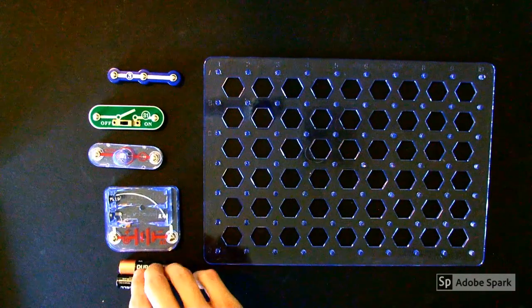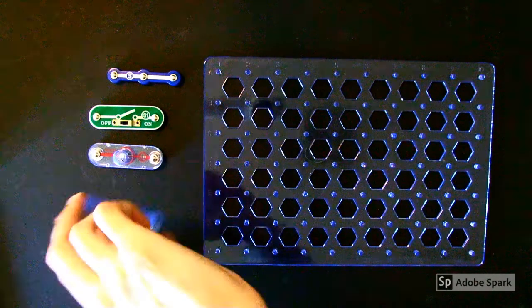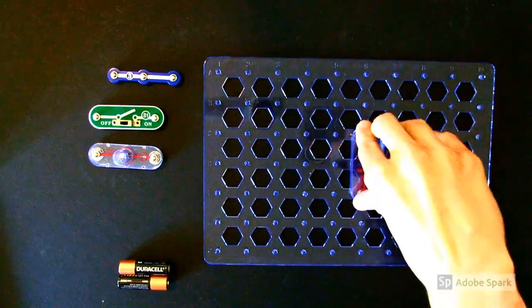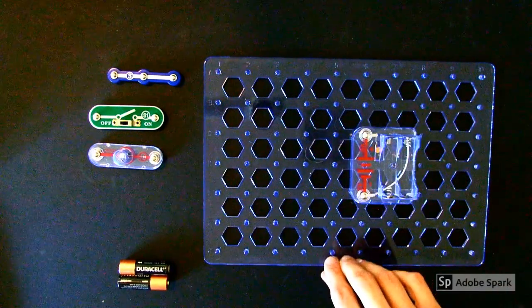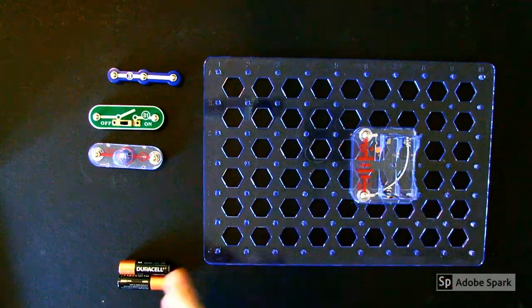Next, always disconnect your batteries while building. If I were to connect this battery holder to the grid, it works just fine without the batteries for now. The last step of my circuit, I'll put my batteries in.